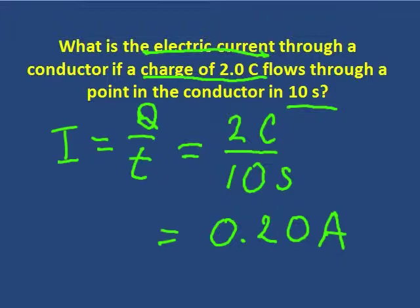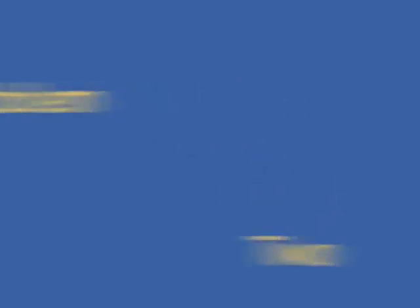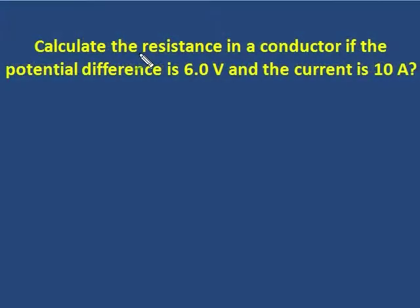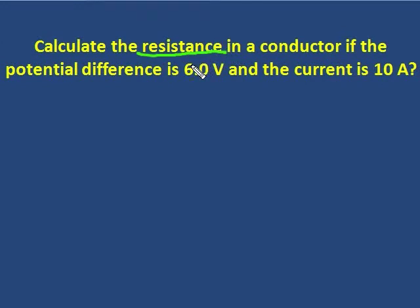Here's the problem. And I want you to hit pause and then read it and try it. Now here, they want us to find resistance, and they've given us potential difference and current. So I have V, I, and R.